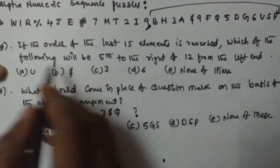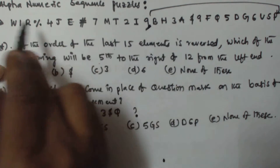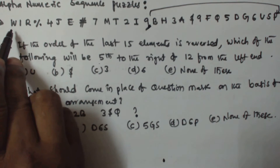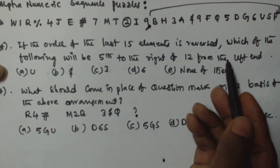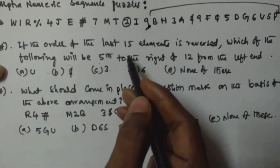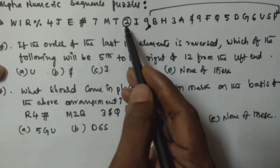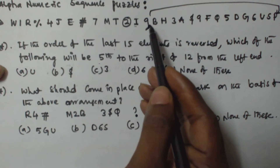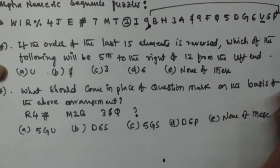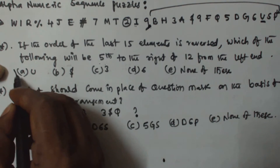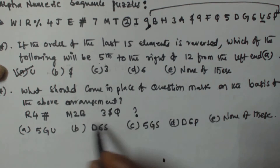Now we find which element is fifth to the right of the 12th from the left. We know position 14 is element 9, so counting left from the start, the 12th element is 2. Then we find the fifth to the right of 2 — moving right: 1st, 2nd, 3rd (reversed section starts here), 4th, 5th — that gives us U. So the answer for the first question is option A, which is U.